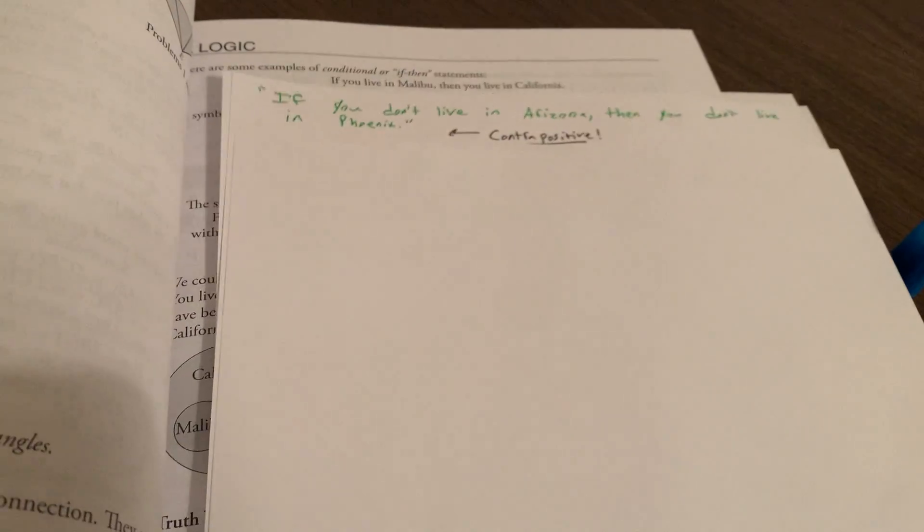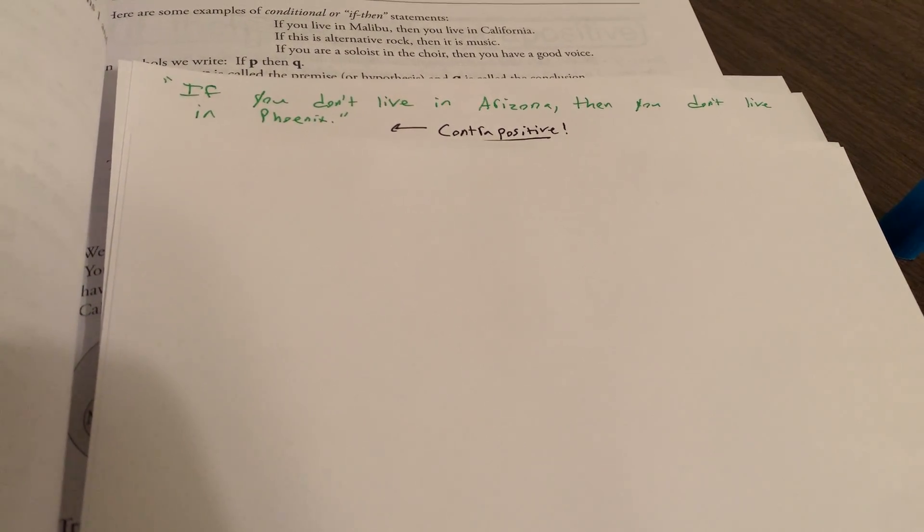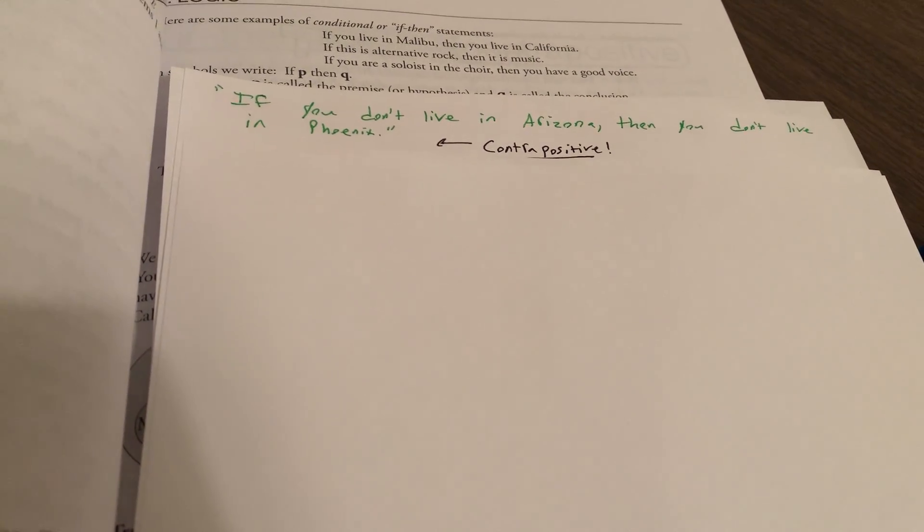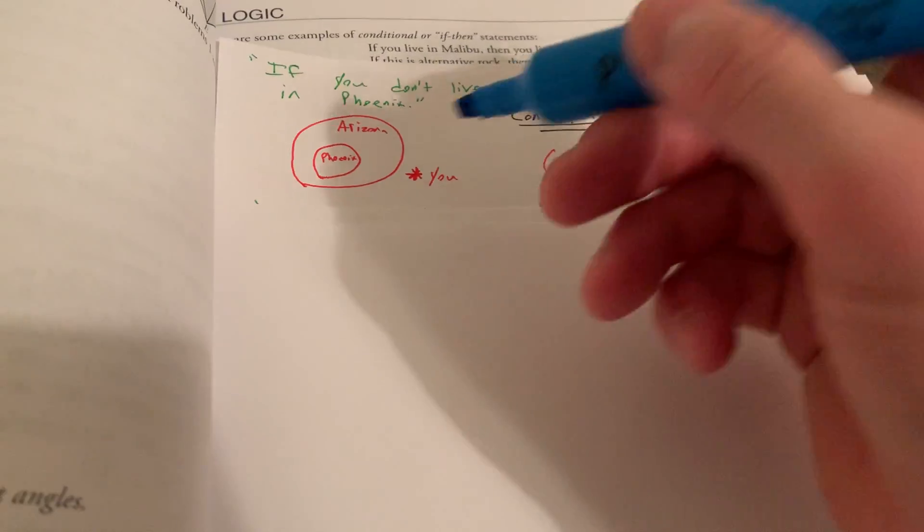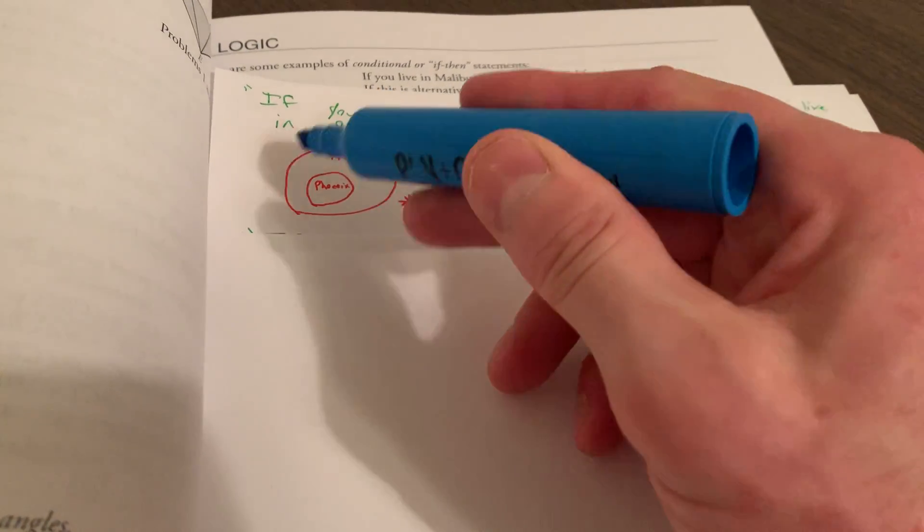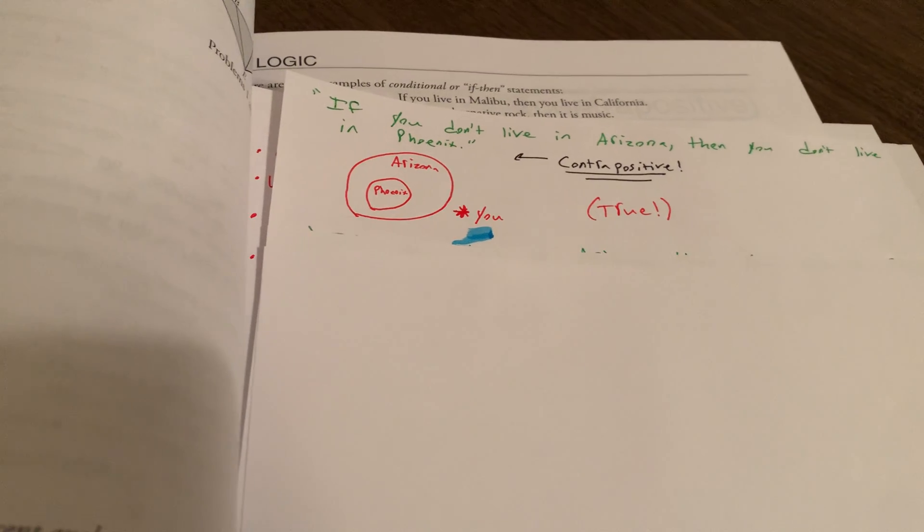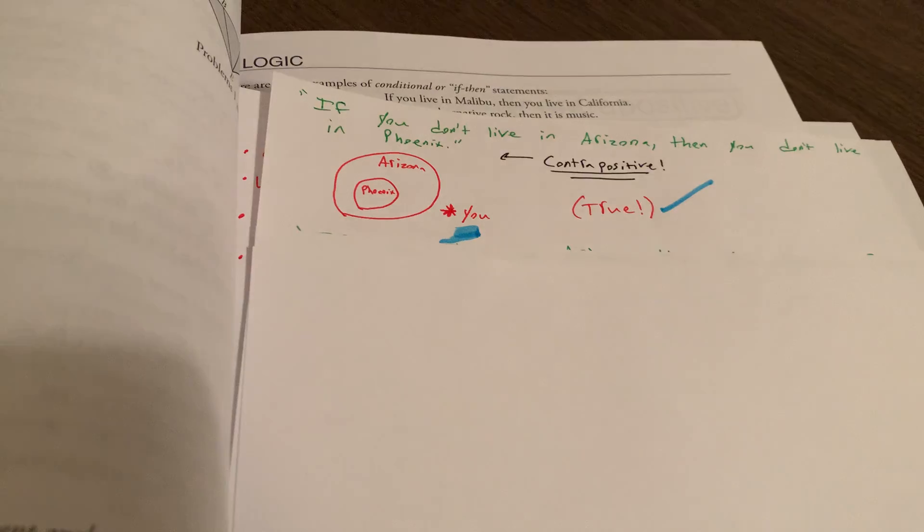How about the contrapositive? As you can see, I do this very amateurishly sometimes, these videos. But anyways, if you don't live in Arizona, then you don't live in Phoenix. So we flipped the P and the Q. We negated each of them respectively. So if you don't live in Arizona, then you don't live in Phoenix. Well, that's true, right? That would be a true one. So we can diagram it this way. Here Phoenix is part of the circle of Arizona, but here you are outside of it. If you don't live in Arizona, then you don't live in Phoenix. So that is a true statement.